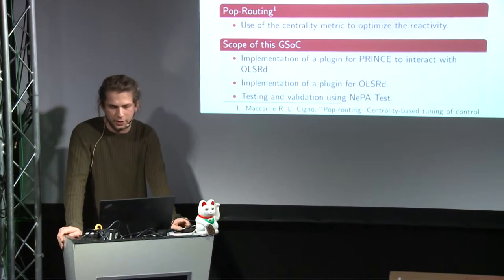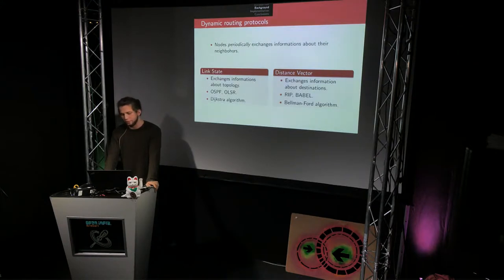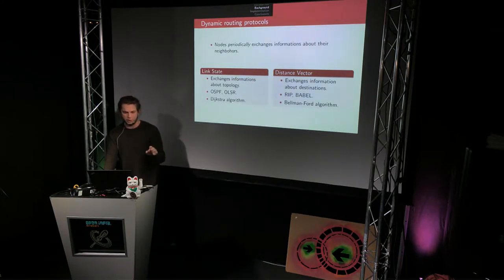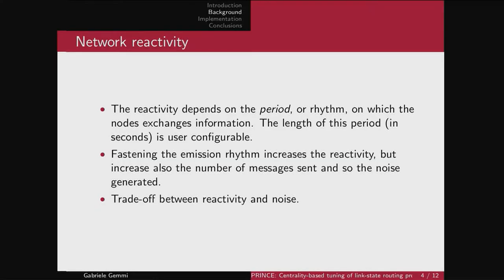In a mesh network we have dynamic routing protocols — software that runs on each router and exchanges information about neighbors. There are two families: link state and distance vector. In link state, every node knows the full topology of the network. In distance vector protocols, nodes just know the distance vector — where to send packets to reach a destination and how far. Examples of link state protocols are OSPF and OLSR; distance vector examples include RIP and Batman.